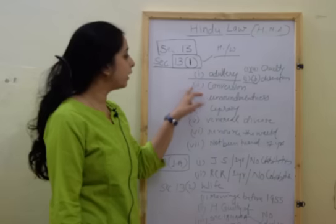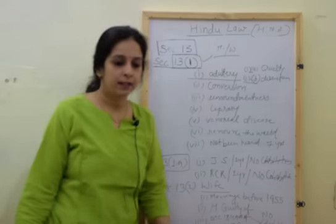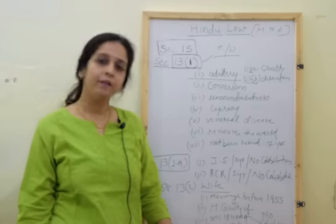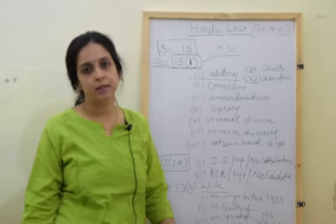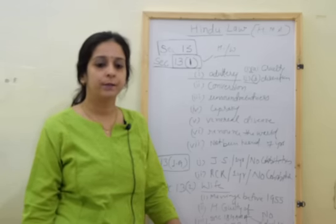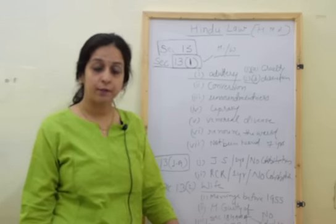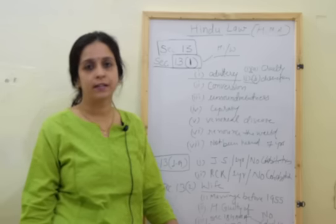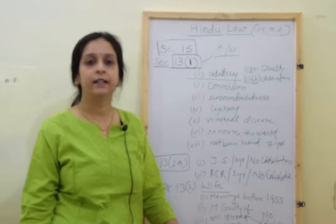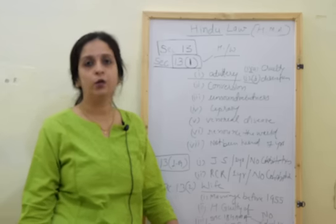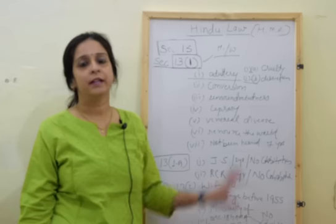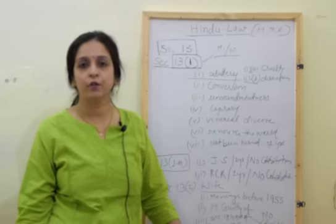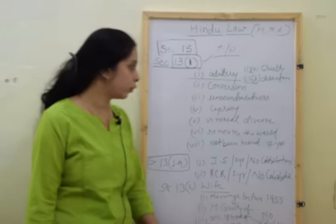Section 13(1), clause 2 is talking about conversion. This Act is applicable to Hindus. When we are talking about a valid marriage, Section 5 talks about the essentials of a valid marriage. If either of the spouses converts himself or herself to any other religion, it is a ground available to the party — because now this Act will not be applicable to that person. So conversion is a ground for divorce.